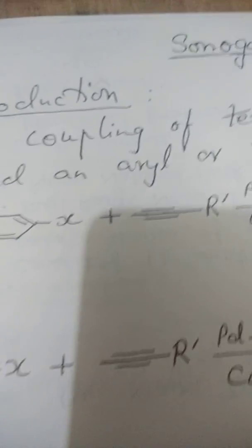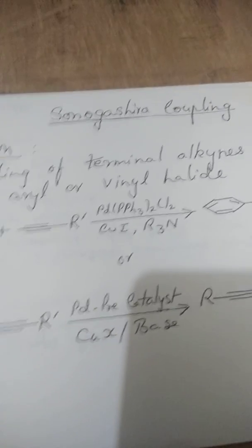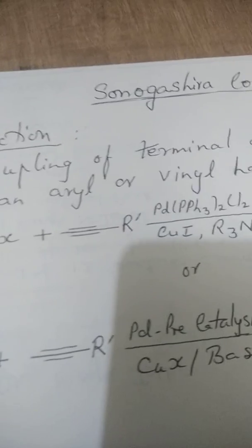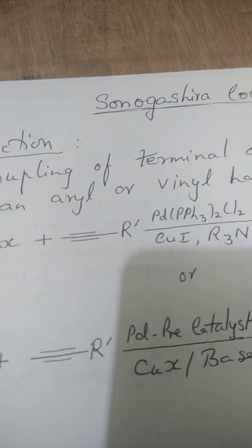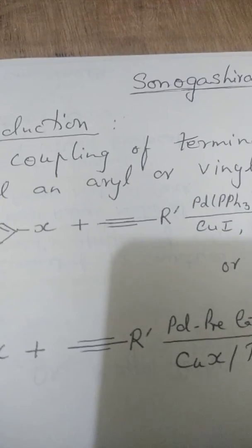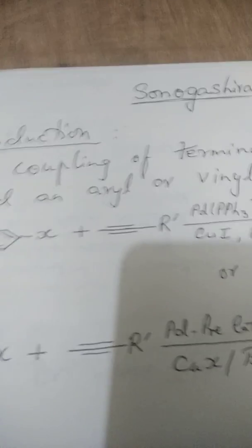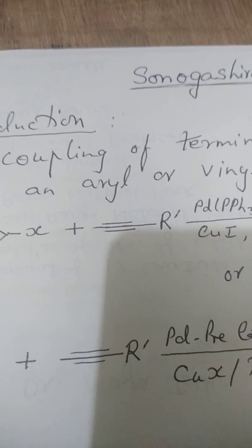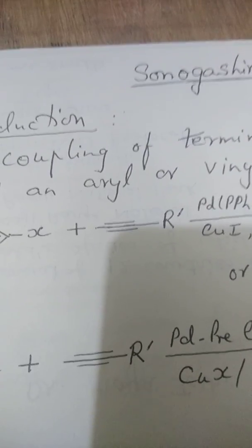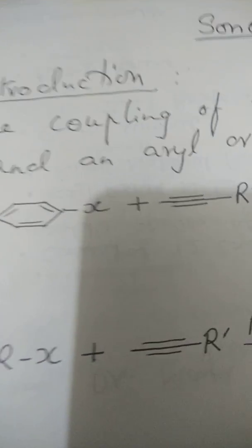So what exactly is this Sonogashira reaction? It is a coupling of terminal alkynes, remember terminal alkynes, with an aryl or a vinyl halide. How? In the presence of the palladium catalyst and copper as co-catalyst using a base. The base generally which is used is either triethylamine or diethylamine. Besides this, other bases at times have been also used.